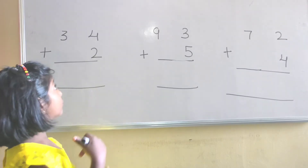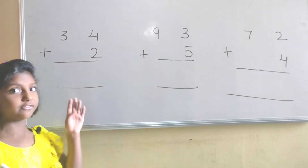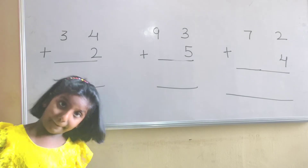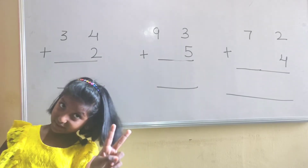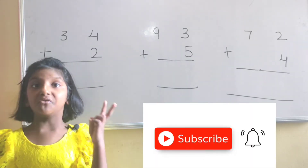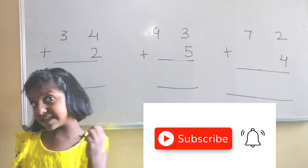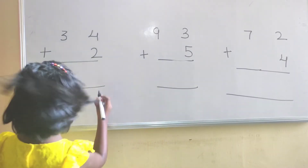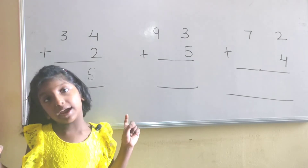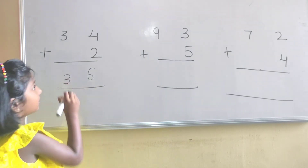Let's see the question: 4, 3 and 4, 2. 4 in mind, 2 in hand. 4, after 5, 6. The answer is 6. Here there is no number to add, that's why I am writing 3.